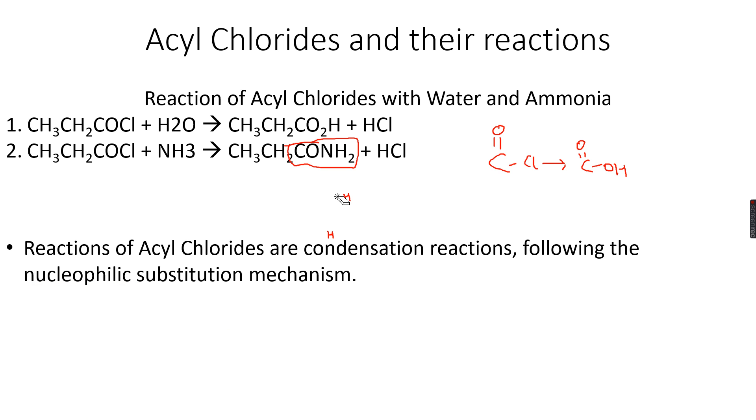Let's discuss the ease of hydrolysis between different compounds. Let's compare between an acyl chloride and an alkyl chloride. For example, we have propanoyl chloride, which is CH3CH2COCl, and we have 1-chloropropane, CH3CH2CH2Cl.